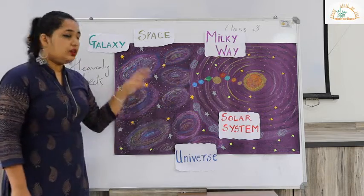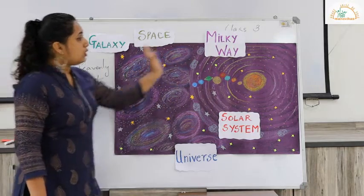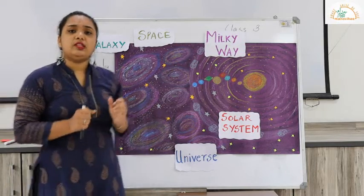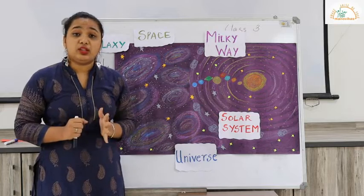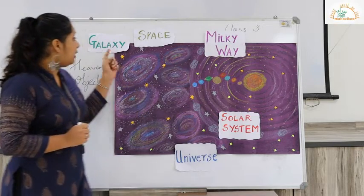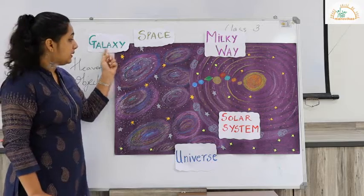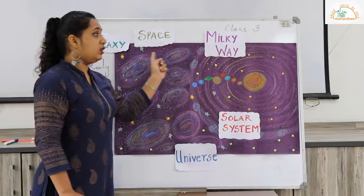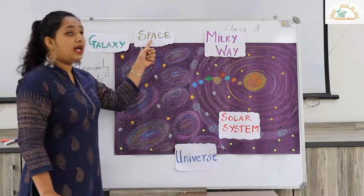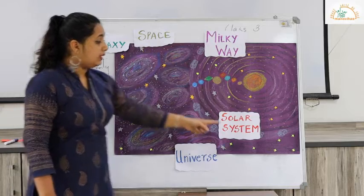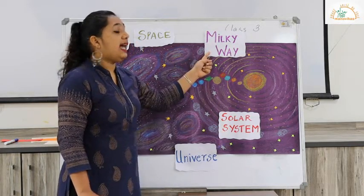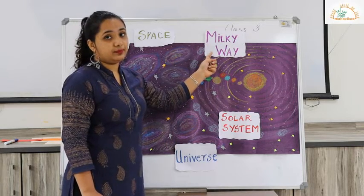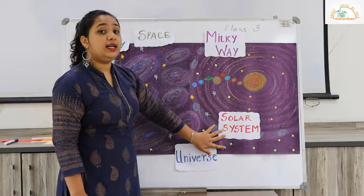So we learnt a few concepts today. Let us revise. This whole thing is what we call the universe. The universe is so huge that it cannot be measured — it has no beginning or end. Then we learnt about galaxy: galaxies are a group of stars clustered together. We learnt about space: the vast expanse of darkness is called space. We learnt about the solar system and the galaxy to which our solar system belongs is called Milky Way.